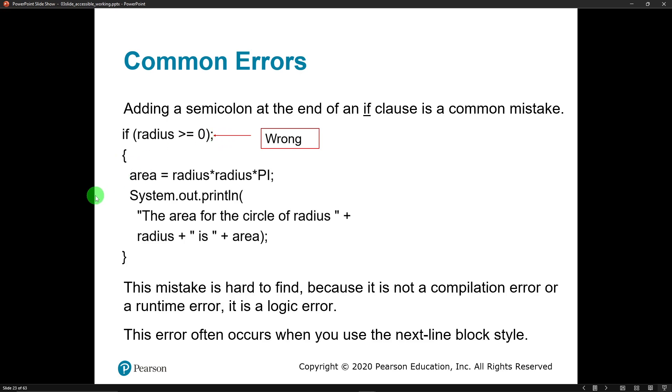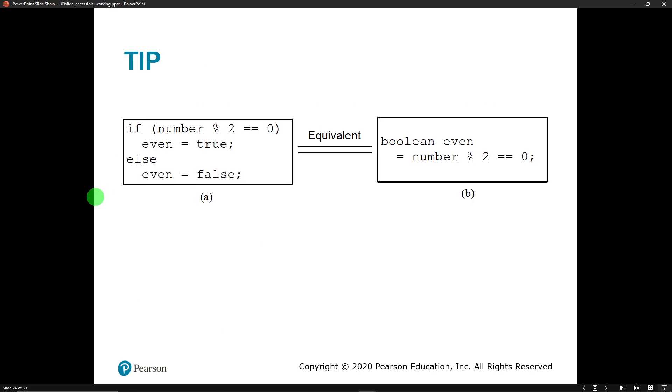Tip: so here we got something - if the number modulus 2 equals 0, then we're going to set this boolean variable even to true, otherwise we're gonna set this boolean variable even to false. That's all well and good, it works just fine, but there's a simpler way to write it.